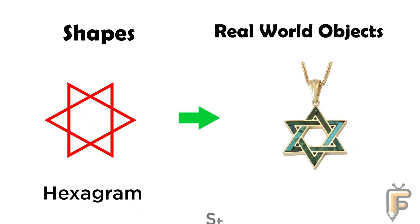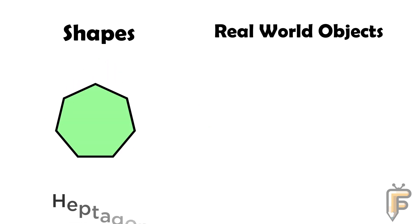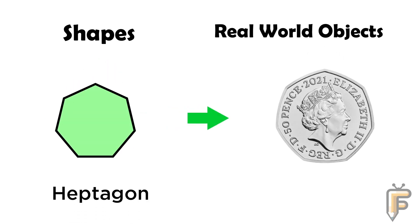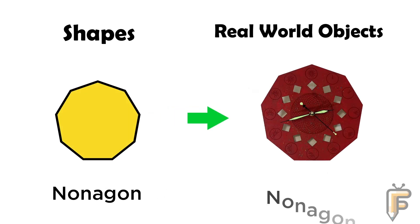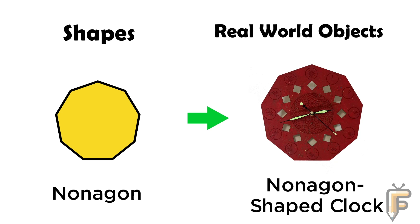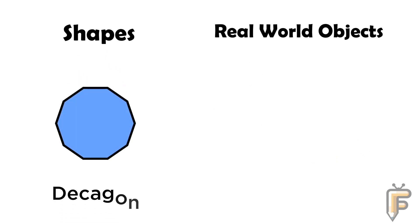Hexagram: Star of David pendant is hexagram shape. Heptagon: UK 50 pence coin is heptagon shape. Nonagon: clock is nonagon shape. Decagon.